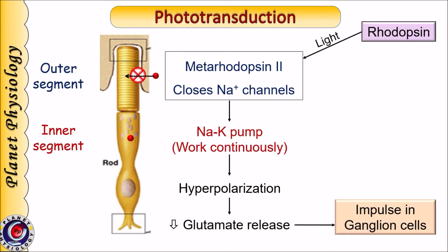Let us quickly summarize the important points in phototransduction. Light energy converts rhodopsin into meta-rhodopsin-2, causing a conformational change in opsin that ultimately leads to closure of cyclic GMP-gated sodium channels. The inner segment continues to pump out sodium, leading to hyperpolarization. This causes decreased release of glutamate, sensed by bipolar cells, and these signals travel electrotonically to ganglion cells, which generate action potentials in their axons. Remember: photoreceptors are the only receptors in the body where a stimulus leads to hyperpolarization.